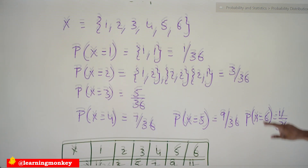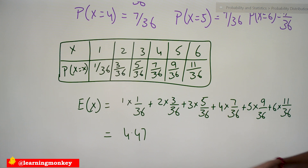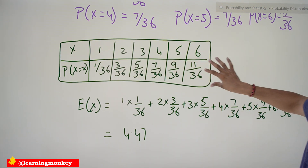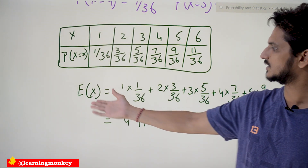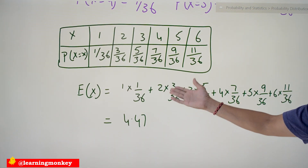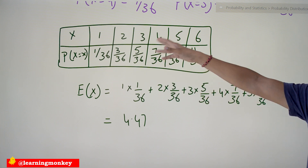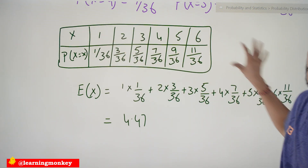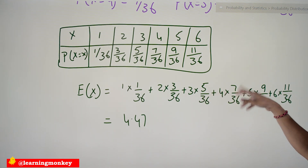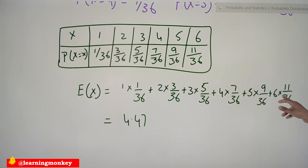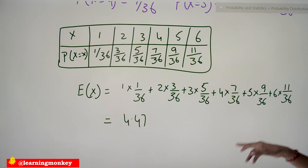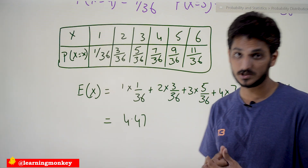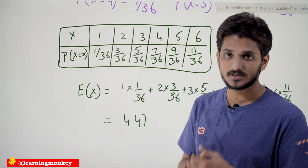The probability distribution table has X values one through six with probabilities 1/36, 3/36, 5/36, 7/36, 9/36, and 11/36. The expected value is: (1 × 1/36) + (2 × 3/36) + (3 × 5/36) + (4 × 7/36) + (5 × 9/36) + (6 × 11/36). The expected value works out to approximately 4.47.